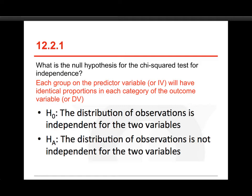Each group on the predictor variable or IV will have identical proportions in each category on the outcome variable or DV. That's correct. It is also fair to say the distribution of observations is independent of the two variables. Two different ways of saying the same thing. Both of those represent the null hypothesis for the chi-squared test for independence.